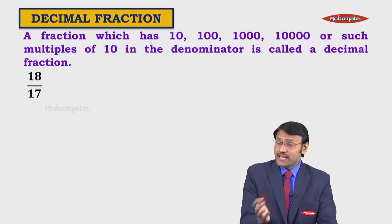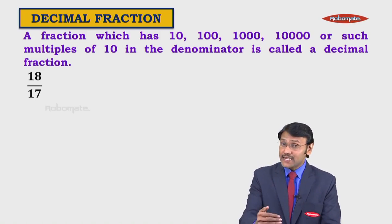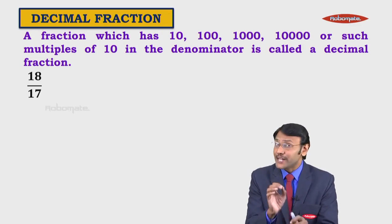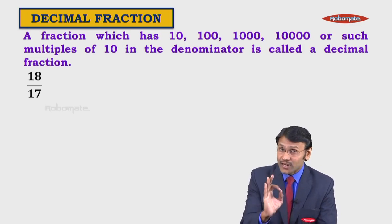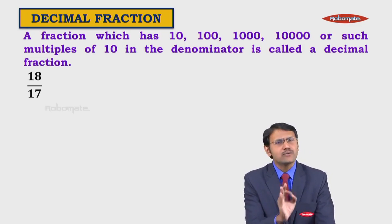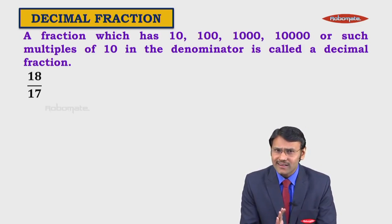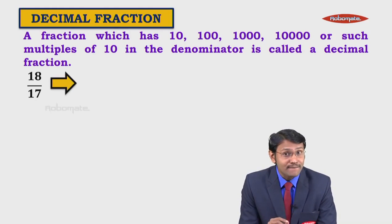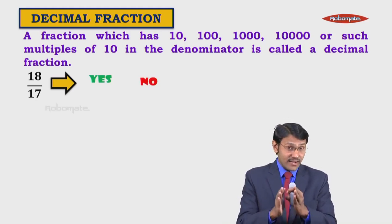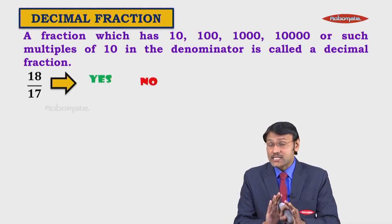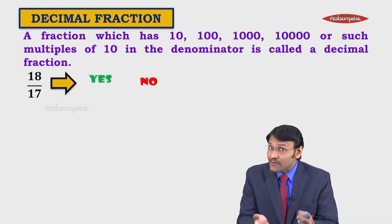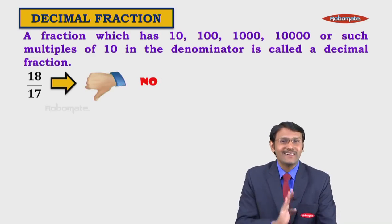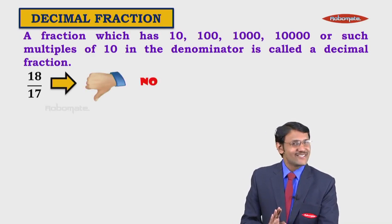Let us understand a few examples. Take 18 upon 17 — you only concentrate on the denominator. Your denominator should be 10, 100, 1000 and so on. In this denominator we have 17. So is 18 upon 17 a decimal fraction? The answer is no.